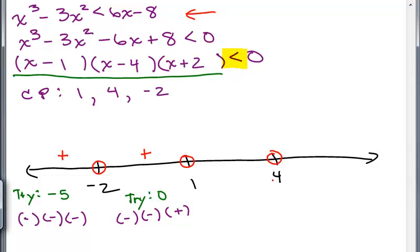We want to pick something in between 1 and 4, so how about we try 3? We're going to plug in 3 into X minus 1, that's positive. 3 into X minus 4, 3 minus 4 is a negative number. And 3 plus 2 is 5, so it's positive. Positive times negative times positive is negative.